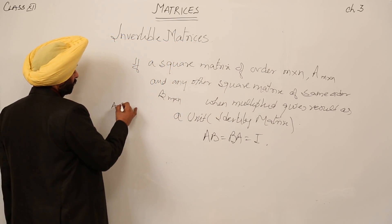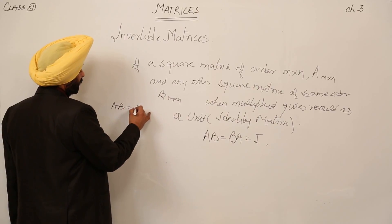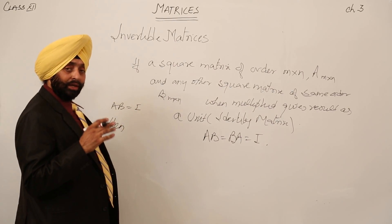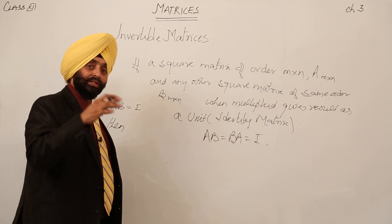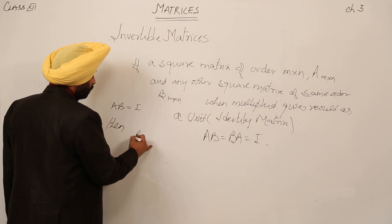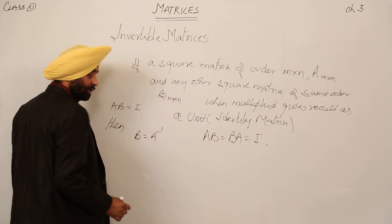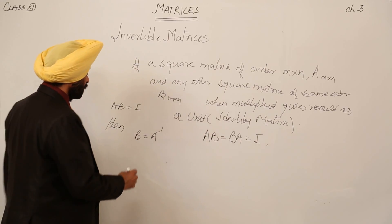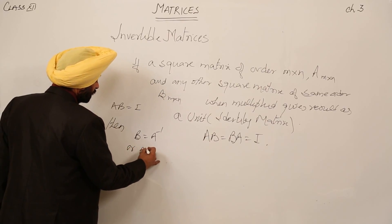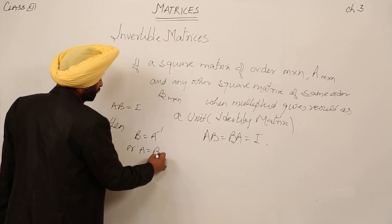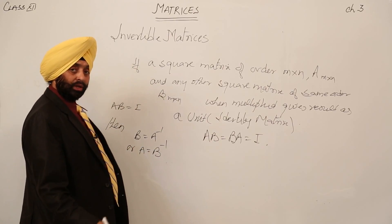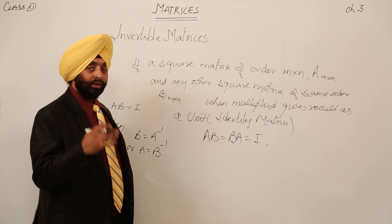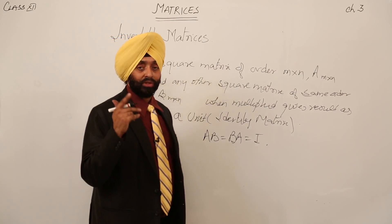If A times B equals I, then B is the inverse of A, or A is the inverse of B. We can say B is equal to A inverse, and inverse is noted as A raised to the power minus one. Or we can say A is equal to B inverse — either A inverse or B inverse is one and the same thing.